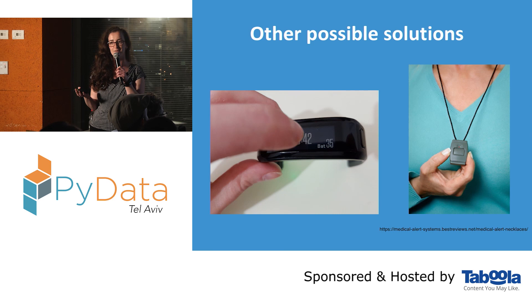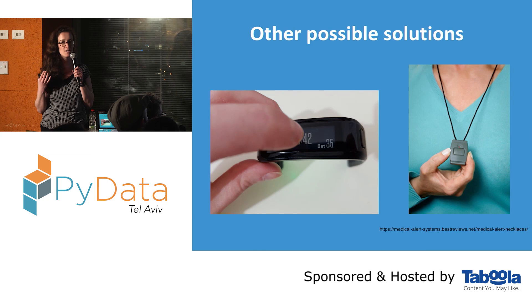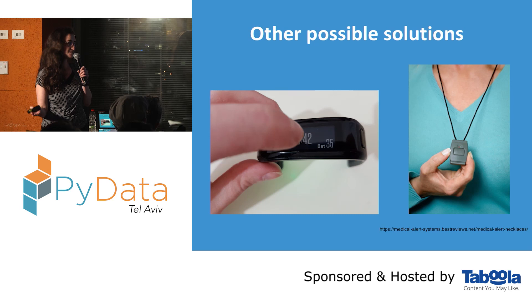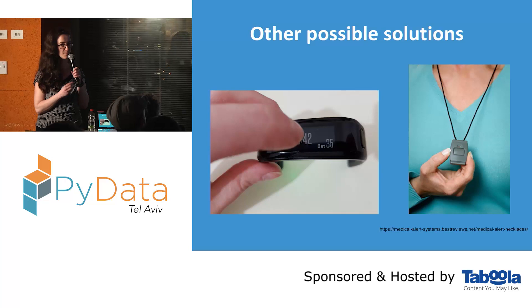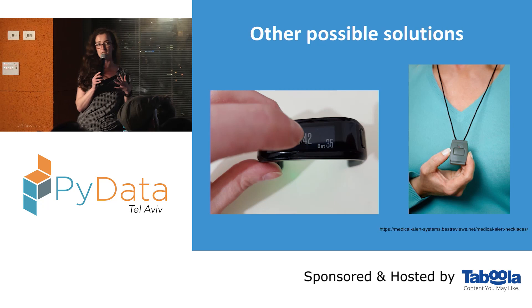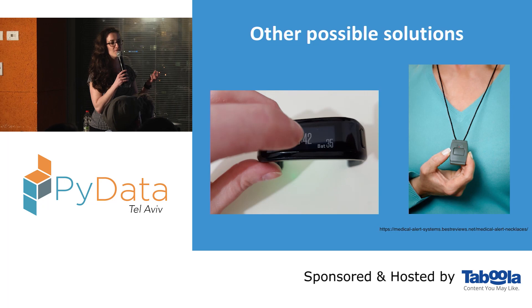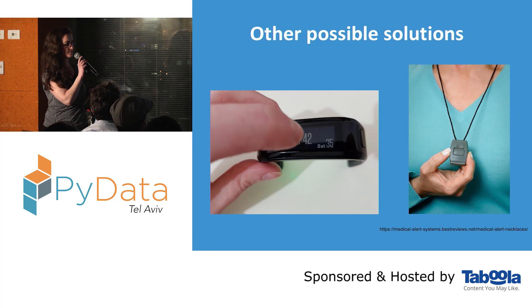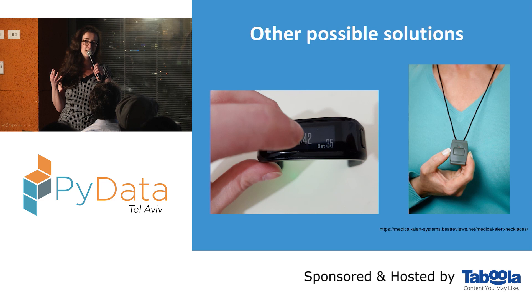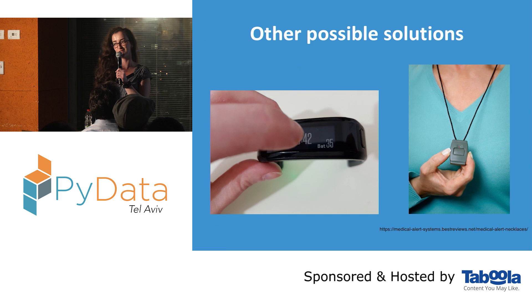So we started to think about other possible solutions. The first solution was a necklace with a physical button, but the problem was that it makes the product expensive and can confuse elderly people who now have to wear two wearable devices instead of one. Another solution we thought of and actually implemented was a tapping mechanism on the screen of the watch — like tapping one, two, three, four, five to set the alarm. But our client didn't like this either because, as they say, you cannot teach an old dog new tricks.